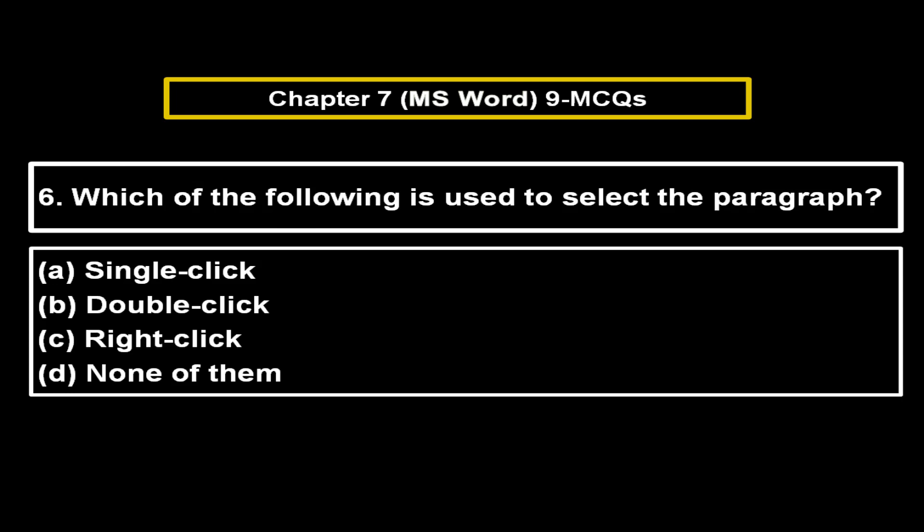Which of the following is used to select the paragraph? Option A: Single click. Option B: Double click. Option C: Right click. Option D: None of them. The right answer is Option D — None of them. Remember, double click is used to select a word, and triple click is used to select a paragraph.